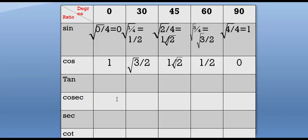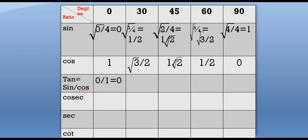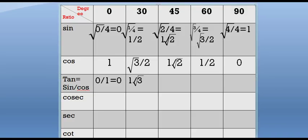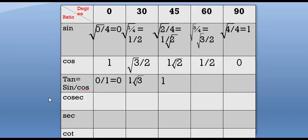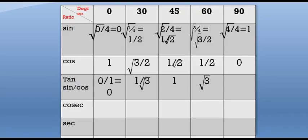Now come to tan. Tan is equal to sine by cos. So we have the value of sine and we have the value of cos, so we just divide them. Start from tan 0: it will be 0 by 1 equal to 0. Tan 30: divide 1 by 2 and root 3 by 2, so the value is 1 by root 3. For 45: both values are the same, so it will be 1. For 60: divide root 3 by 2 and 1 by 2, so the value will be root 3. For 90: divide 1 by 0, which is equal to infinity.